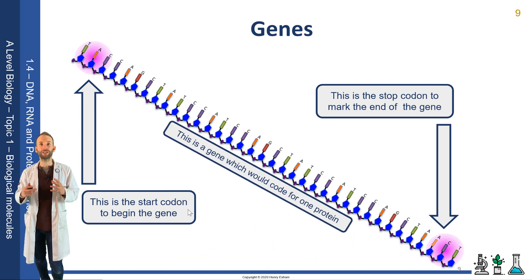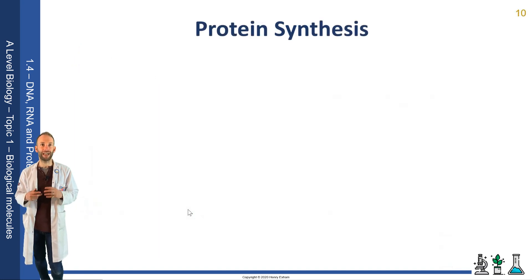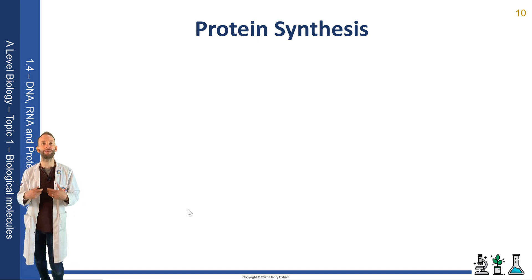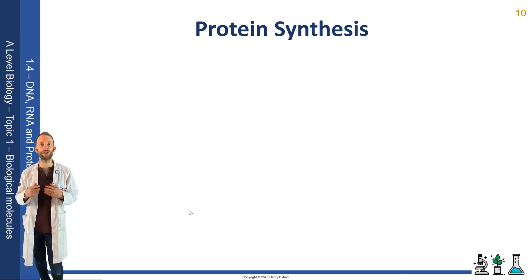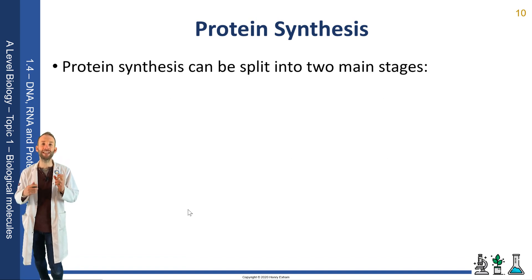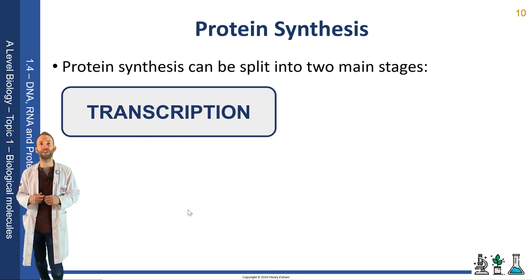The process of how DNA is read and then a protein assembled has been simplified up until this point — we said you read it in threes and you make a protein. But now we're going to go into more detail as to exactly how that process works of protein synthesis. And you can split it into two stages: transcription and translation.